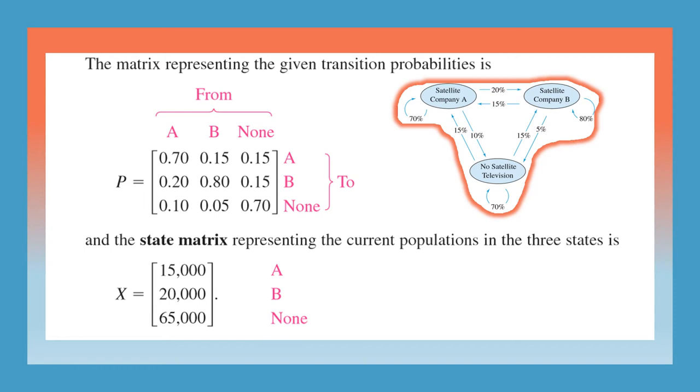And then the state matrix X is 15,000 currently in A, 20,000 are in B, and the remaining are in no cable TV.